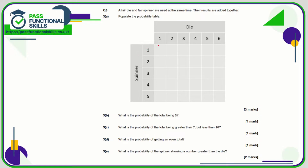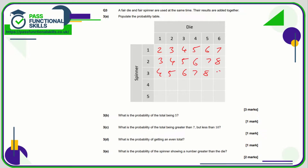Question three: we need to populate the table by adding the scores together. One plus one is two, two plus one is three, then four, five, six, seven. Two plus one is three, four, five, six, seven, eight. Four, five, six, seven, eight, nine. Five, six, seven, eight, nine, ten. Six, seven, eight, nine, ten, eleven.